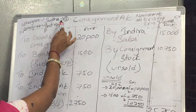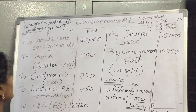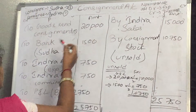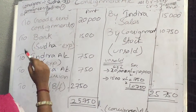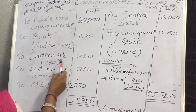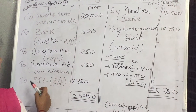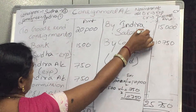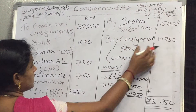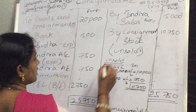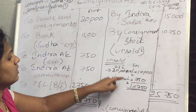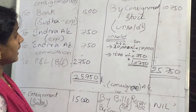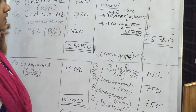As discussed, Suda is the consignor and Indra is the consignee. Goods sent on consignment: 20,000. Suda's expenses: 1,500. Indra's expenses: 750. Indra's commission: 750. Indra's sales: 50% sold for 15,000. Consignment stock — that is, unsold stock at 50% — calculated amount is 10,750. This calculation of unsold stock is very important in these types of problems.